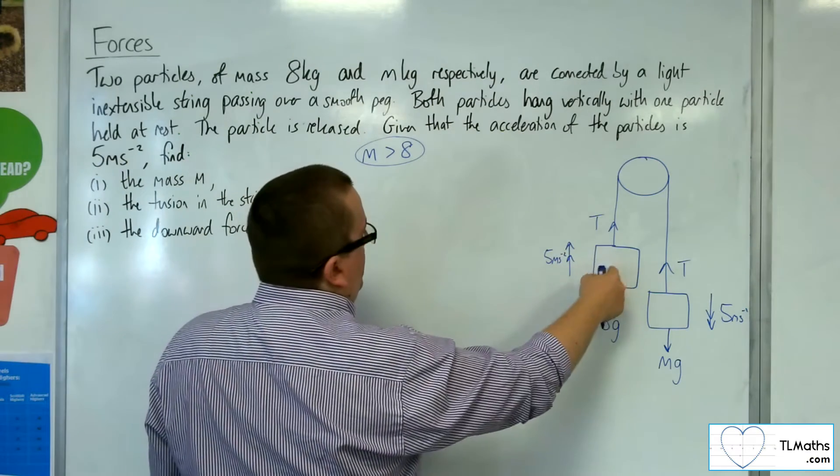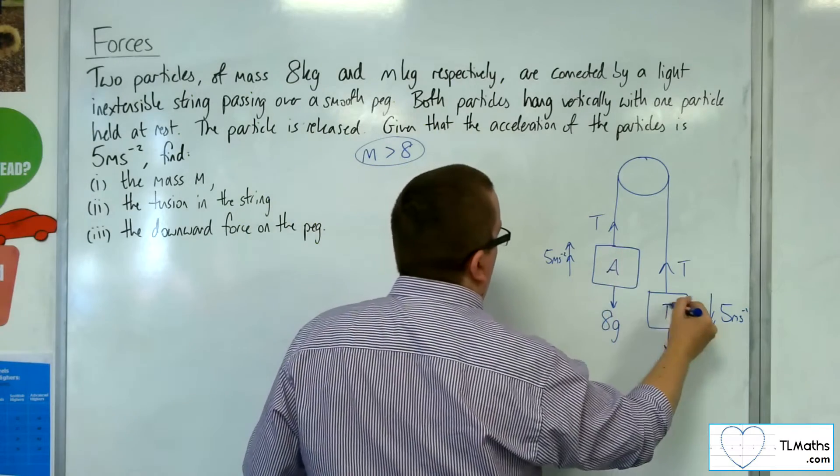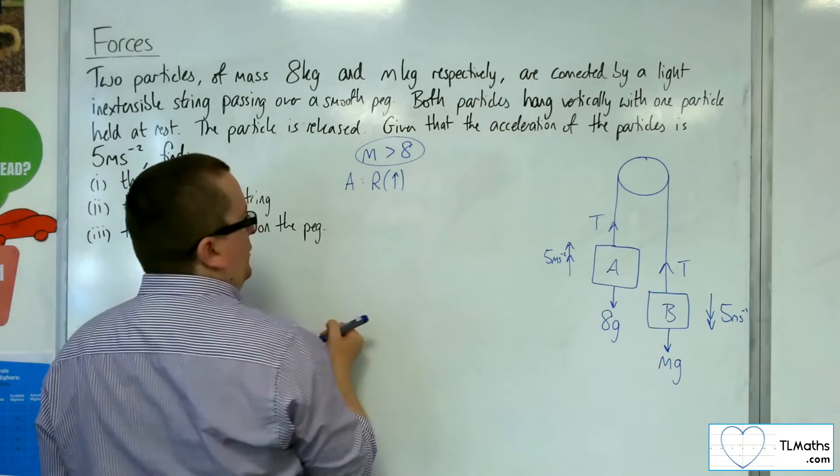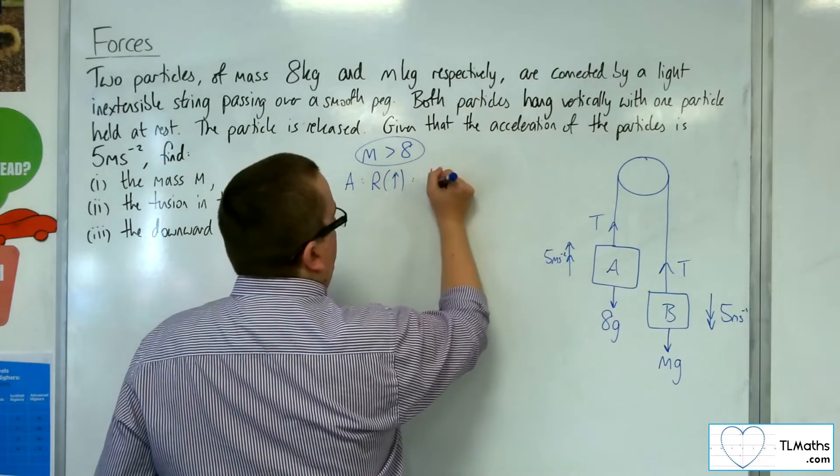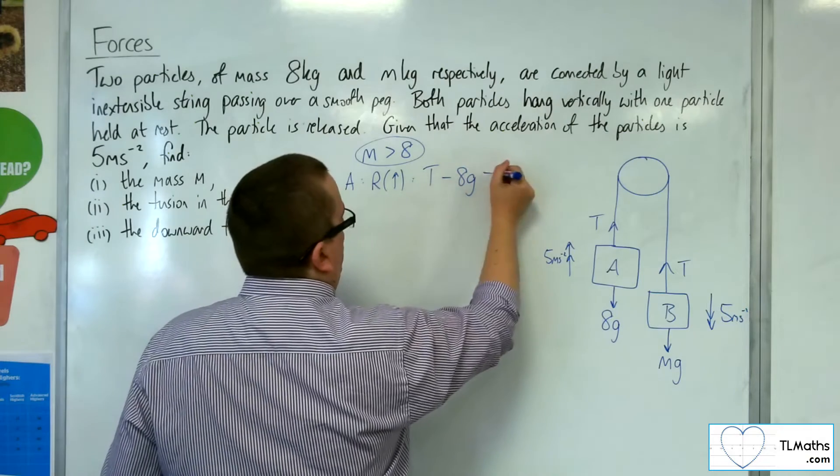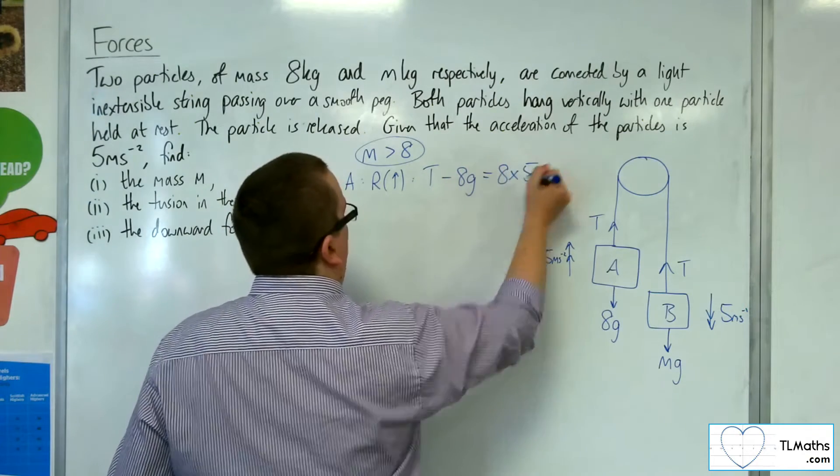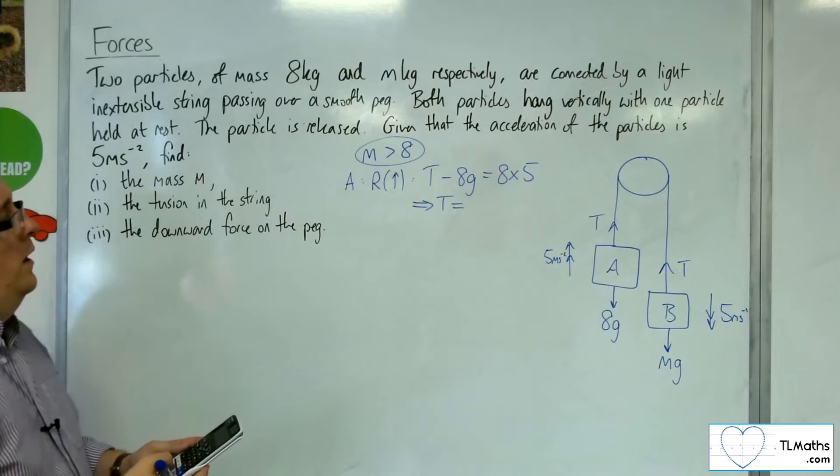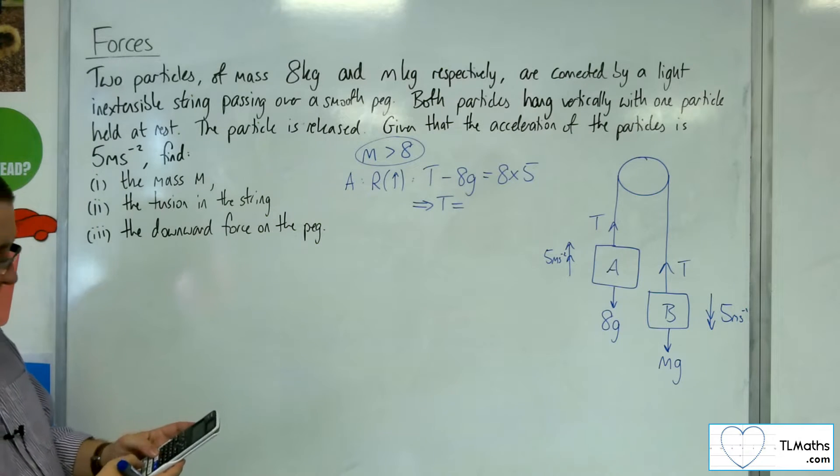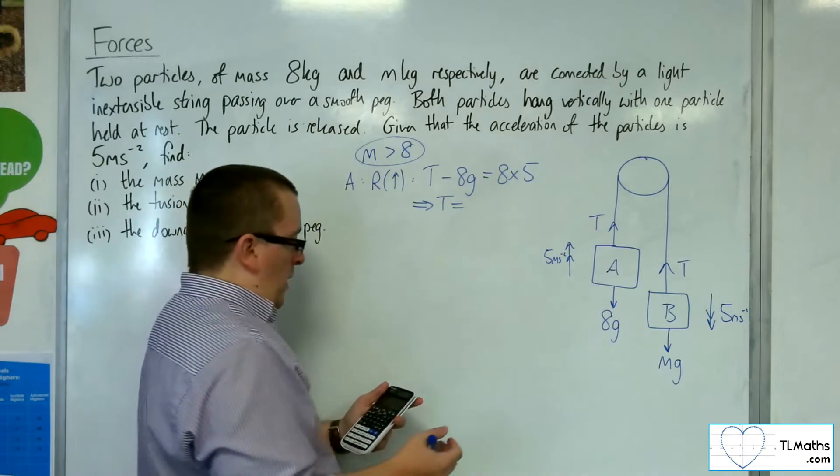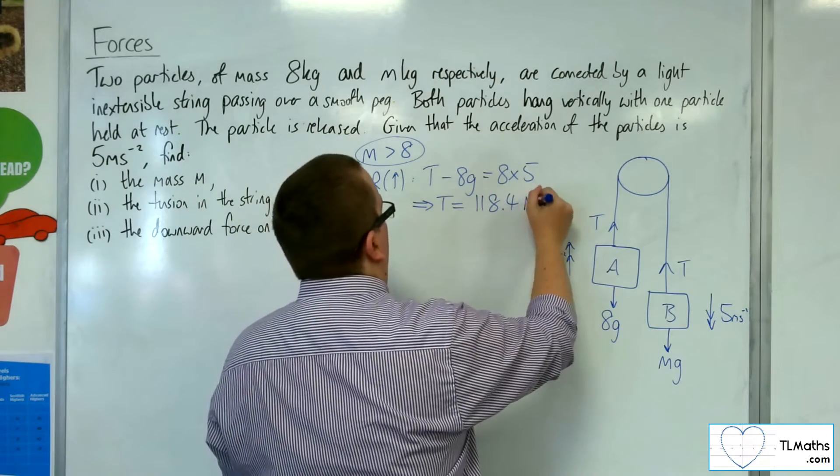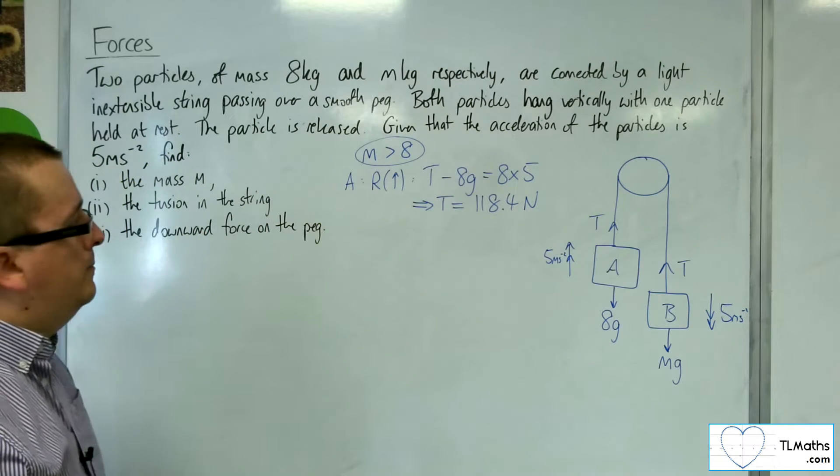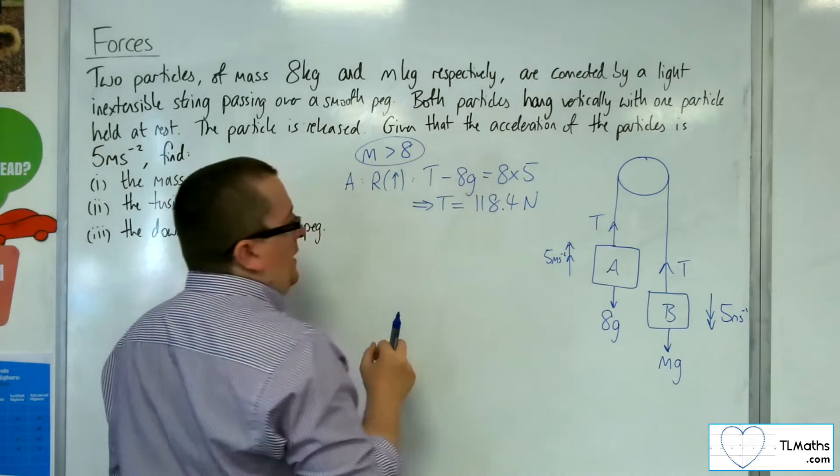Let's have a look at that situation. If we resolve this particle here, let's call that one A and that one B. So if I look at A and I resolve vertically, taking upwards as positive, then I've got T take away 8g is equal to the mass 8 times the acceleration of 5. So the tension, straight off the bat, 8 times 5 plus 8 times 9.8 would be 118.4. So that's really answering part 2, if m is greater than 8.